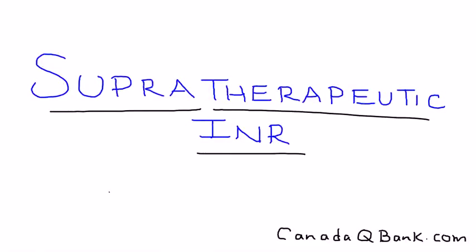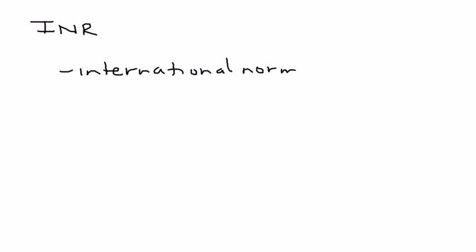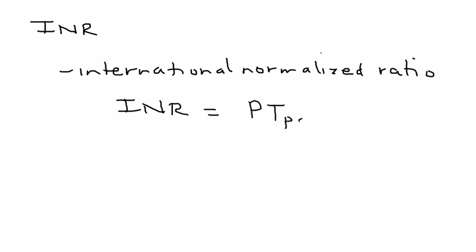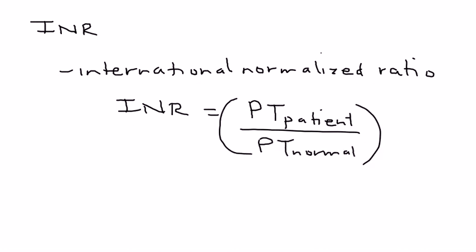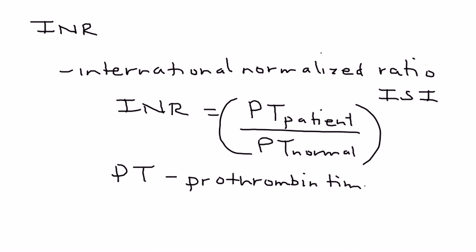Let's talk about supra-therapeutic INR. INR stands for International Normalized Ratio. The INR value is an equation: it equals the patient's PT divided by the normal PT, all raised to the power of ISI, which stands for International Sensitivity Index. PT is the prothrombin time, which tells you how long it takes the plasma to clot.